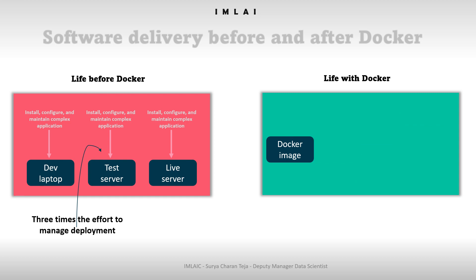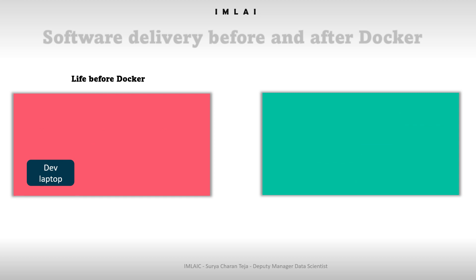Let's take one example to make this simpler. We need to deploy a static web application in production, but before we put it into production we have to go through a development server, testing server, staging server, and finally the production or live server.